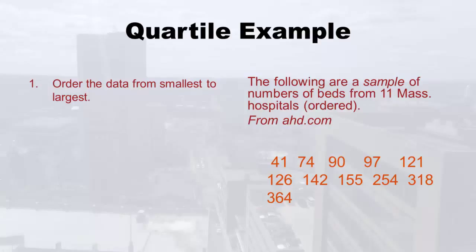Here's the example I promised. On the right side of the slide you'll see a sample of data I collected. I went to ahd.com — that's American Hospital Directory dot com — which provides publicly available information about American hospitals. I took a random sample of 11 Massachusetts hospitals and wrote down how many beds each had. Hospitals with several hundred beds are considered large; less than 100 beds is smaller. I already did step one: ordering the data from smallest to largest. My smallest hospital had only 41 beds and my largest had 364 beds.